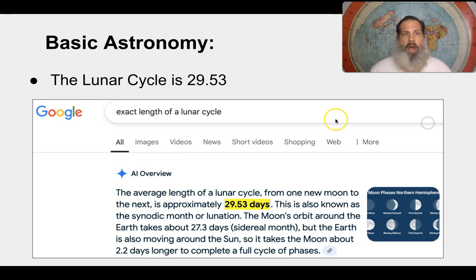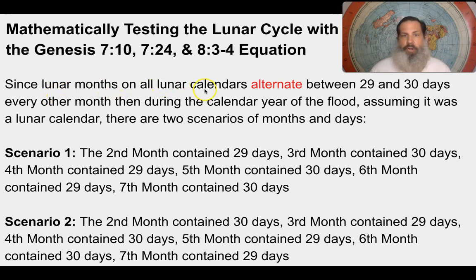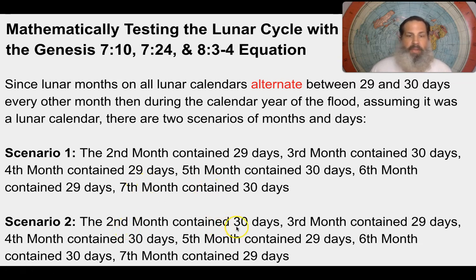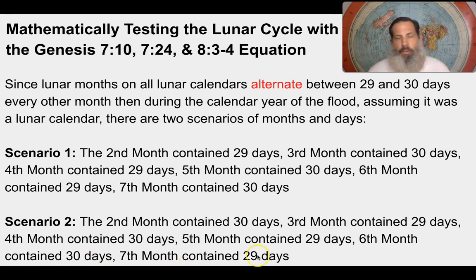Now we need to solve the equation, but first we need to understand basic astronomy. The lunar cycle from new moon to new moon is approximately 29.53 days — that is the average length. Since all lunar months on lunar calendars alternate between 29 and 30 days every other month, there are two scenarios for the flood year assuming a lunar calendar. Scenario one: month two has 29 days, then 30, 29, 30, 29, 30. Scenario two: month two has 30 days, then 29, 30, 29, 30, 29.